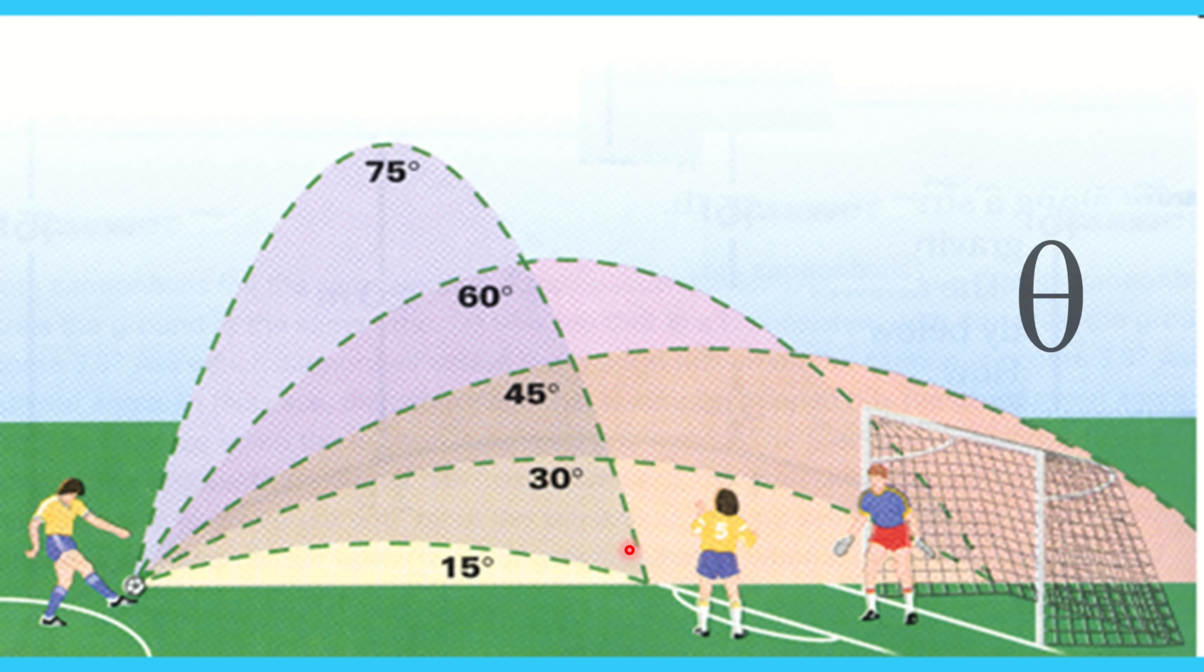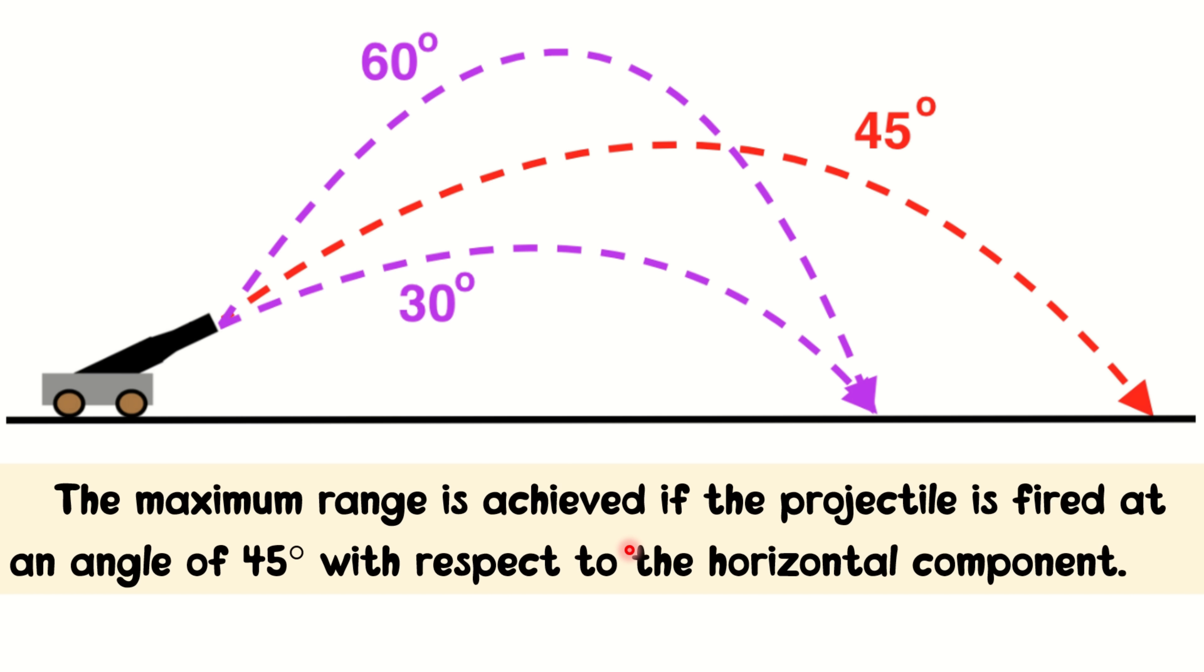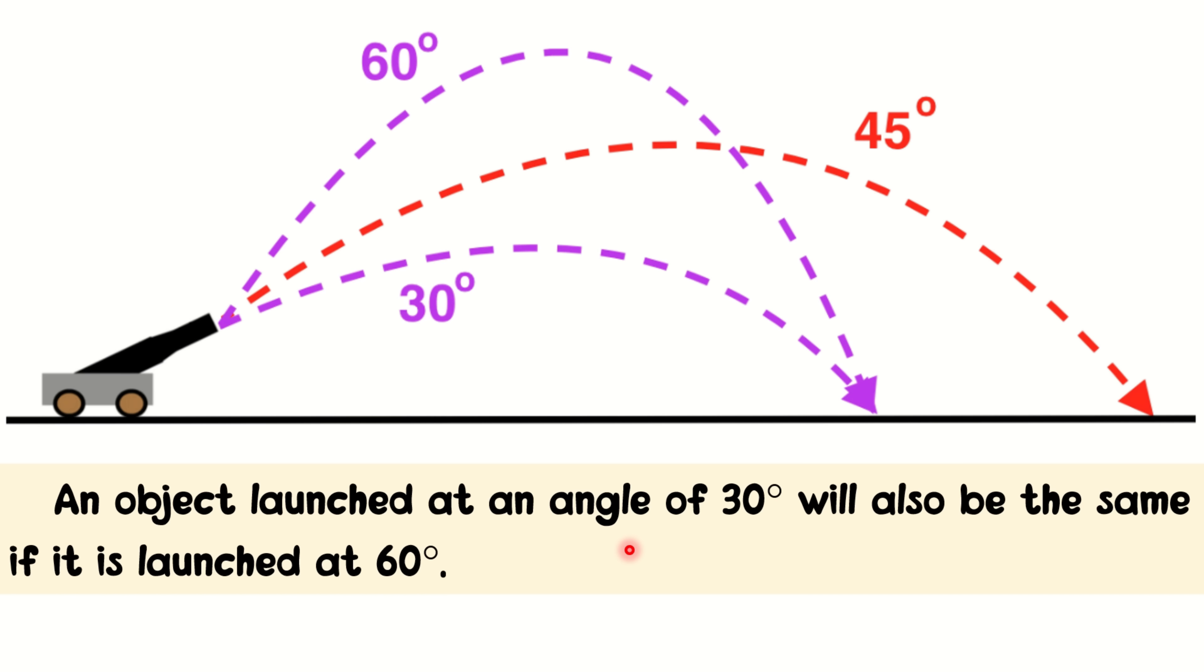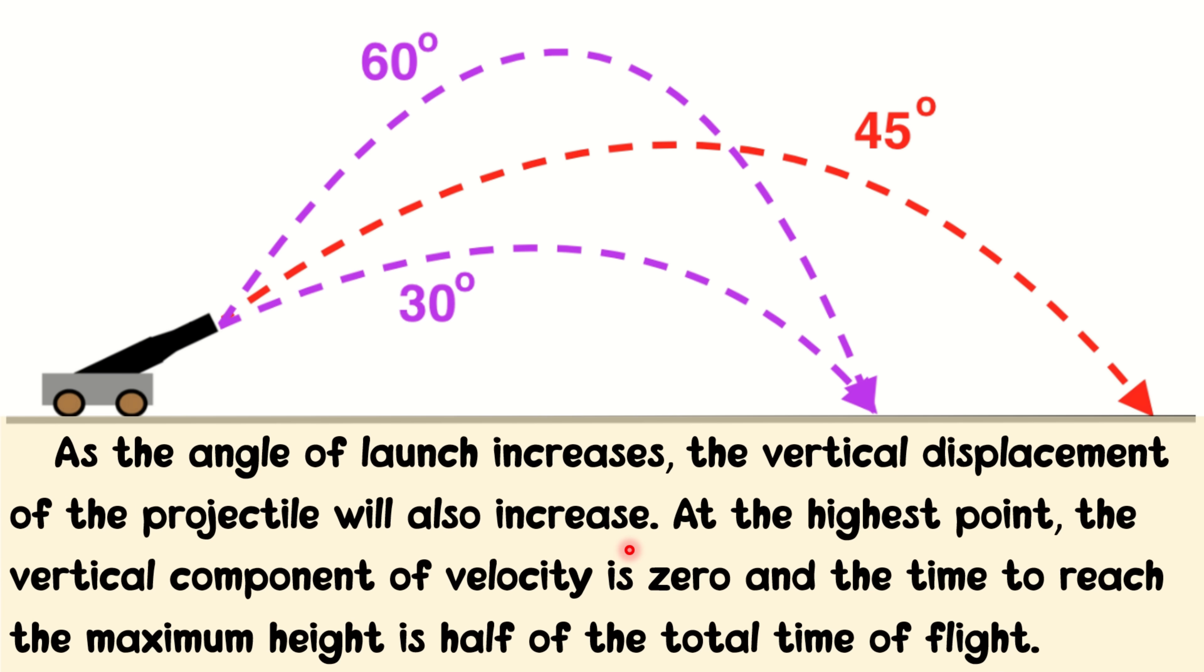Angle that is usually represented by theta is a numerical value in degrees expressing the orientation of a projectile to be thrown. To sum it up class, the angle of release affects the range and height of a projectile. The maximum range is achieved if the projectile is fired at an angle of 45 degrees with respect to the horizontal component. An object launch at an angle of 30 degrees will also be the same if it is launched at 60 degrees. The angles 30 and 60 degrees are called complementary angles because they add up to 90 degrees. As the angle of launch increases, the vertical displacement of the projectile will also increase. At the highest point, the vertical component of velocity is zero. And the time to reach the maximum height is half of the total time of flight.